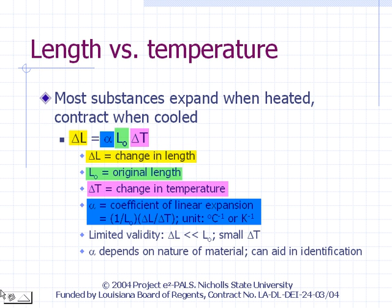Experimentally, alpha can be determined by simply measuring the change in length of the rod as the temperature is changed. The experiment is designed so that the change in length is very small compared to the original length. Of course, we expect the change in length to be smaller the smaller the temperature change. The formula given here is more correct in the limit of very small temperature changes.